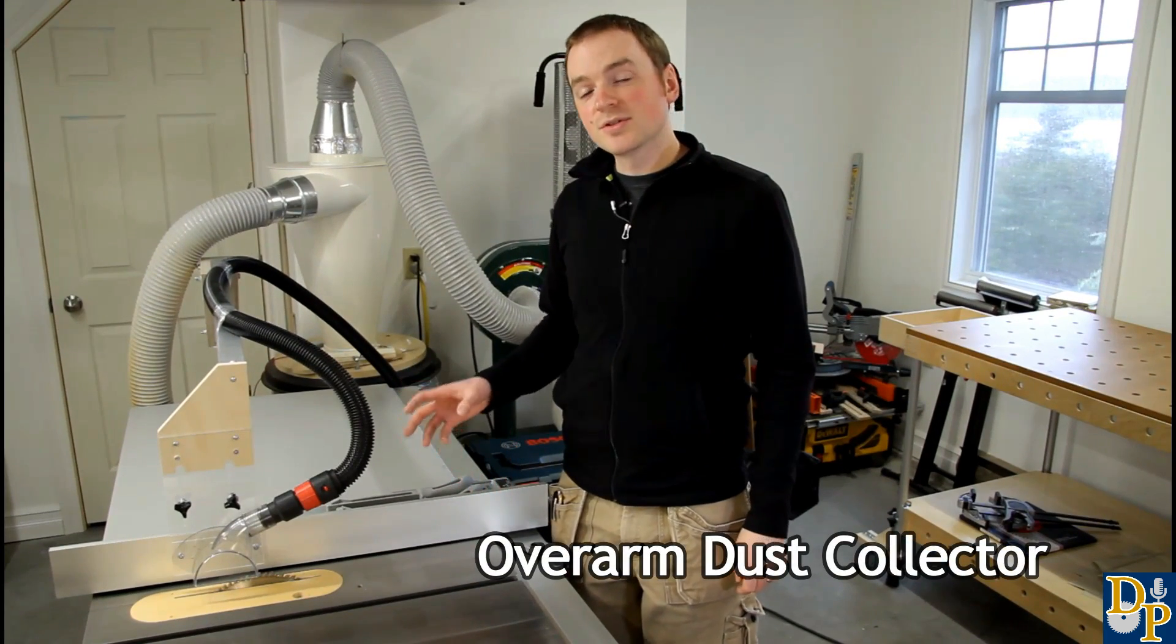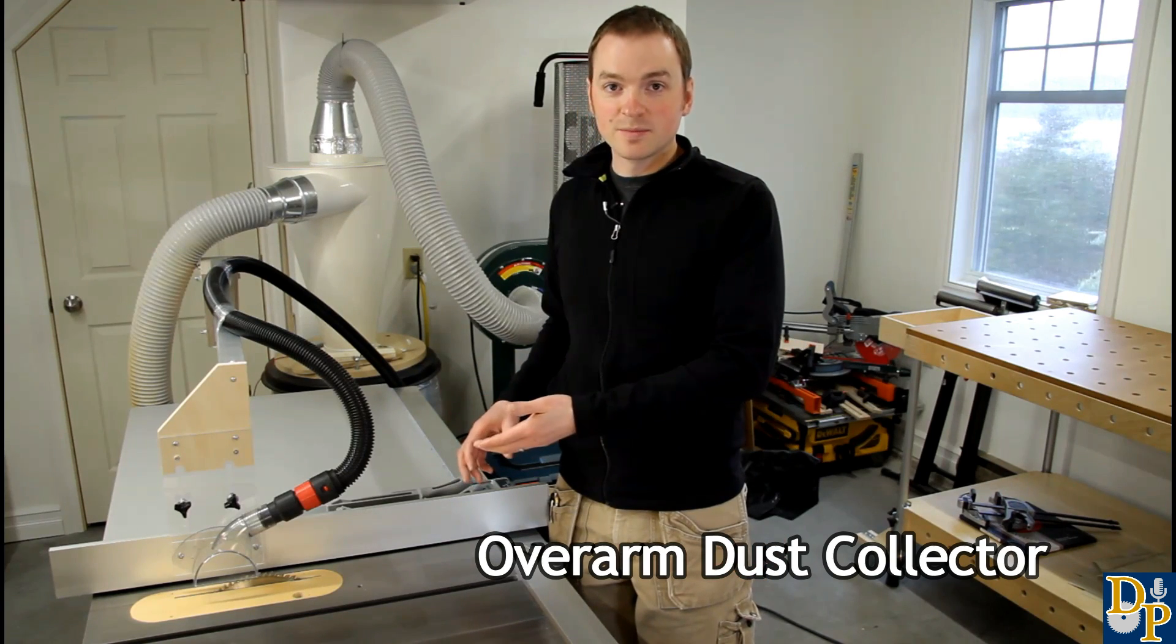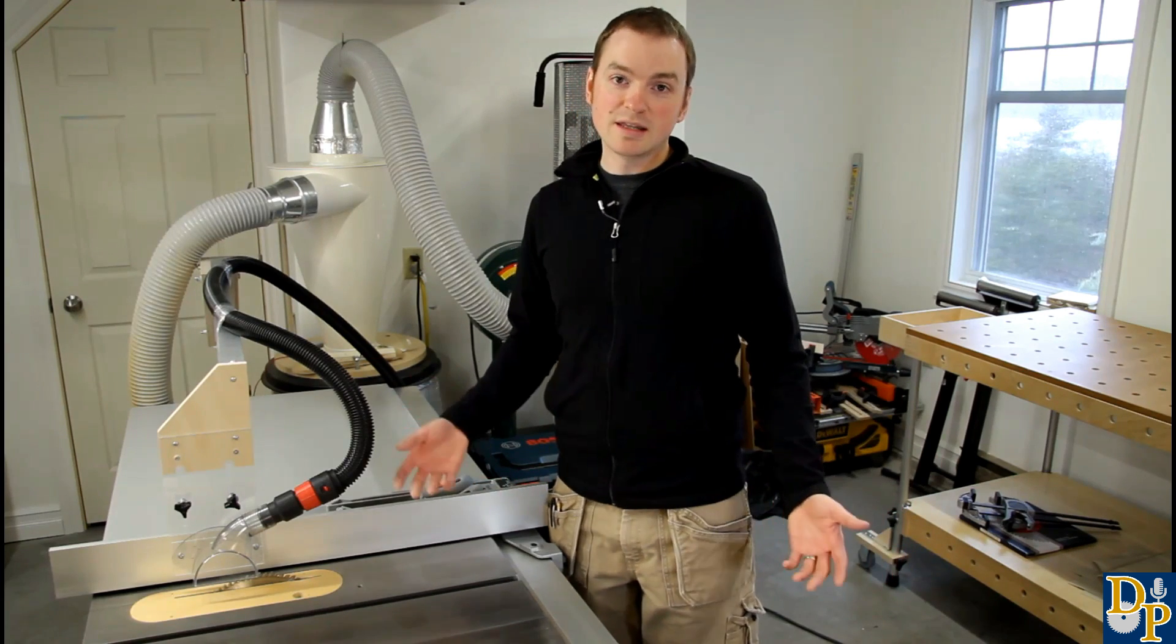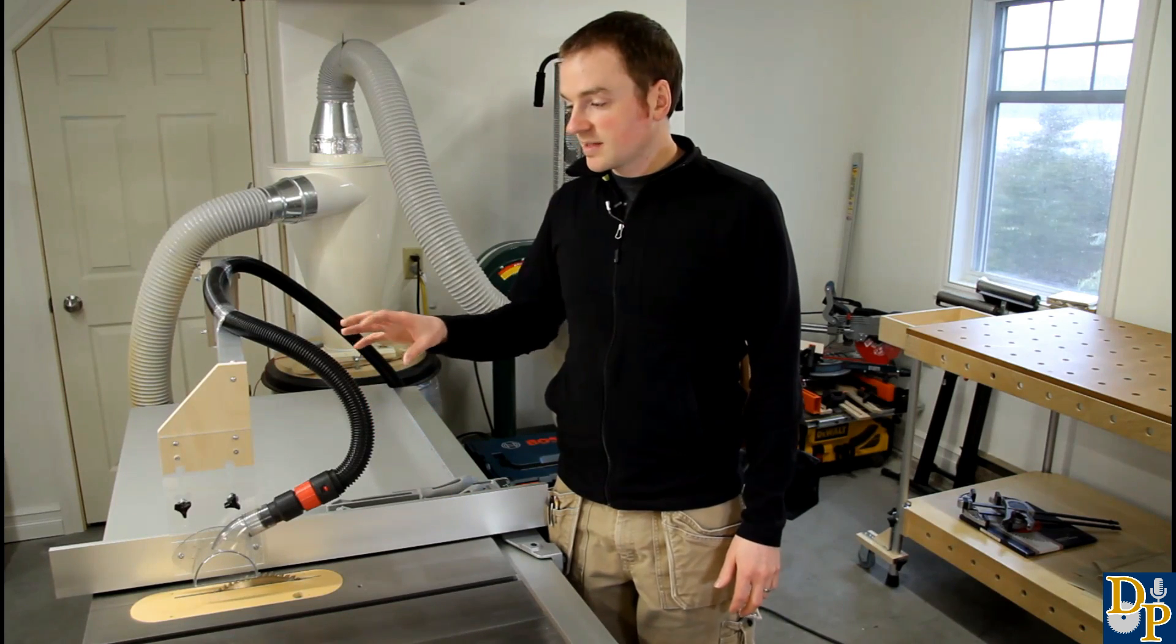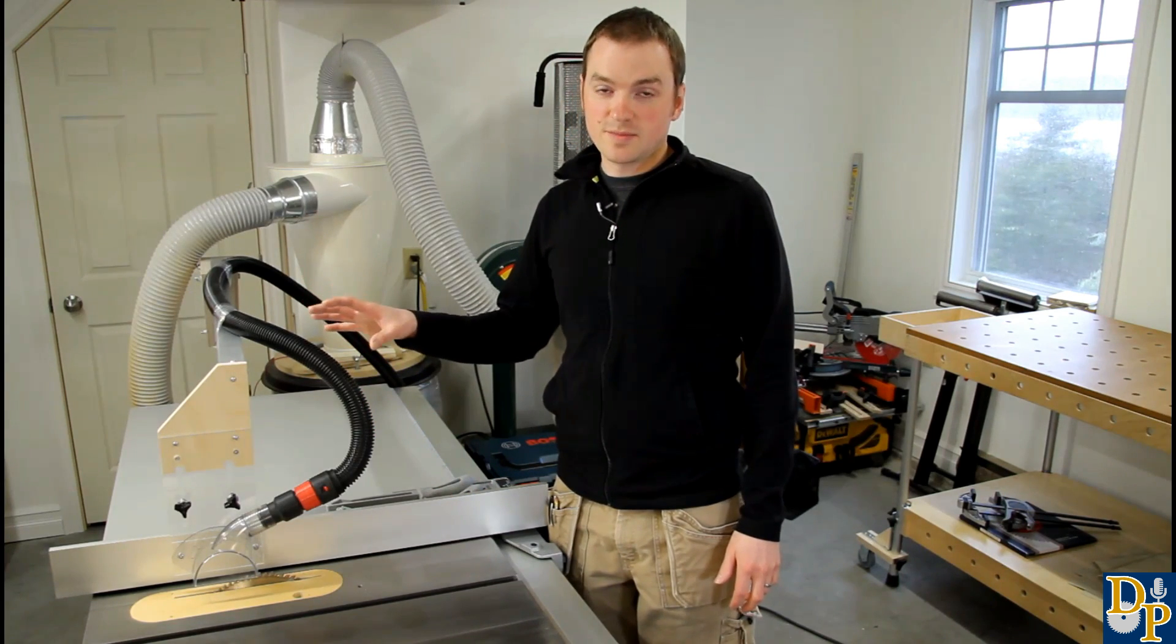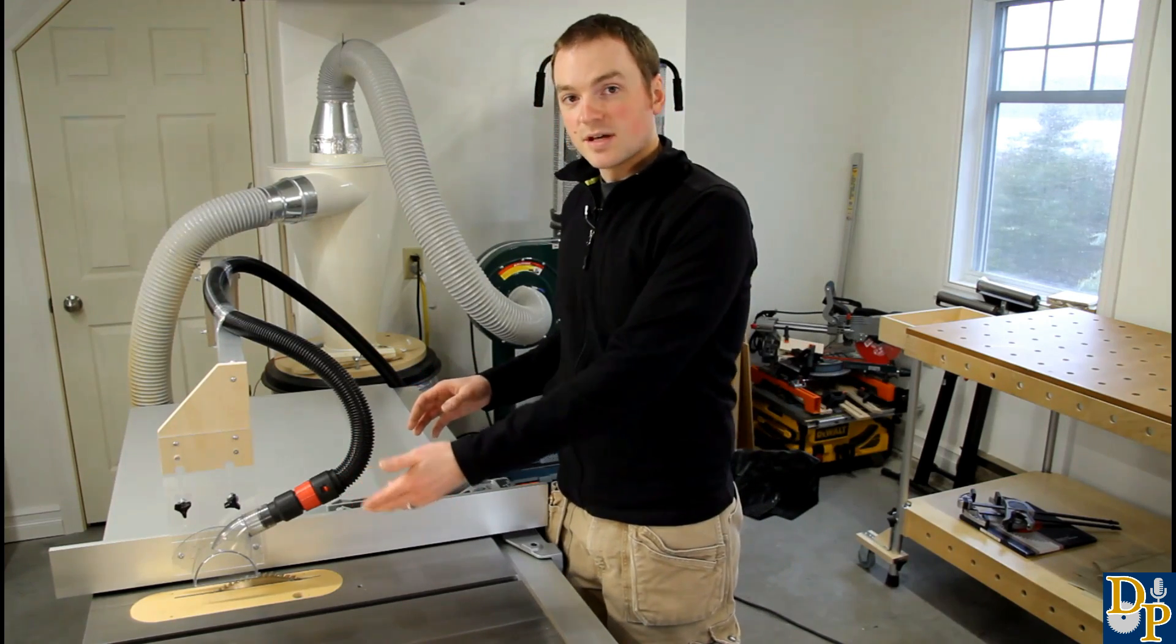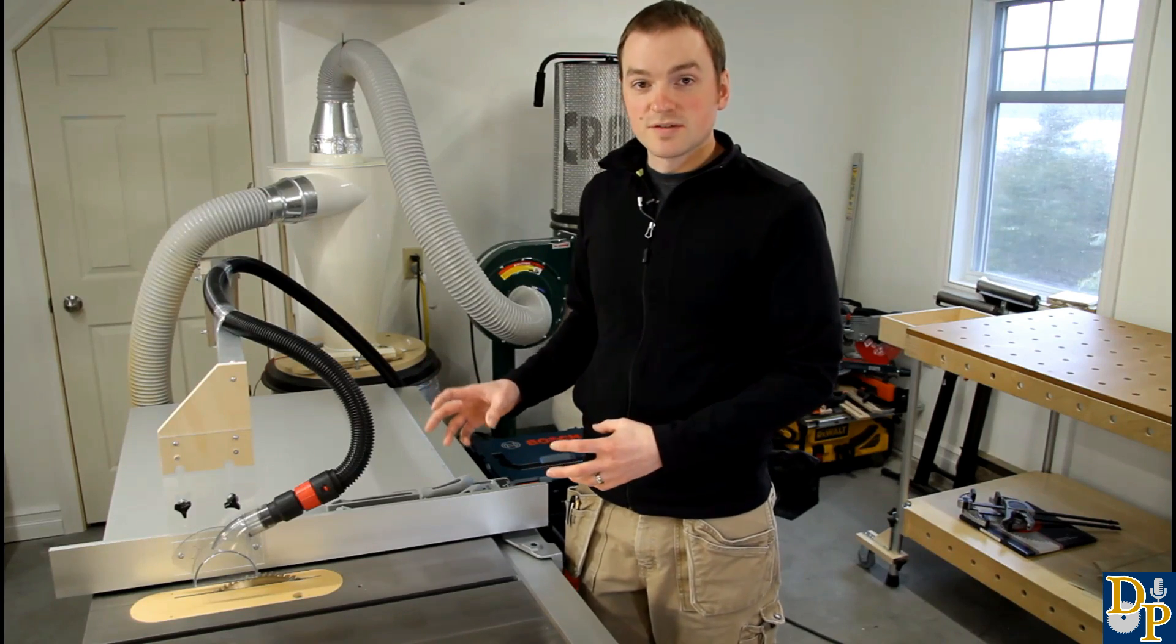So no matter how good your under table dust collection is, you still get dust spitting off the back of the blade. Now that's the dust that always ends up all over the front of you, on the floor, in front of the saw and in the air and it just makes a mess. So to fix that problem, I've designed and built this overarm dust collector for my table saw. Now what it does is it collects that dust that spits off the back of the blade and really improves the collection efficiency.